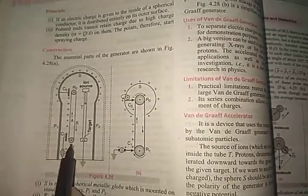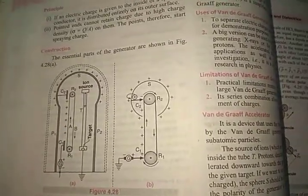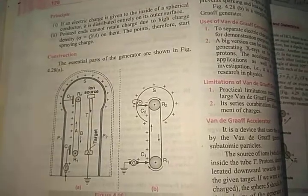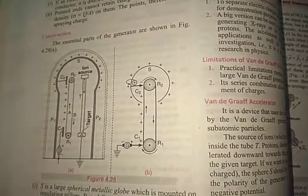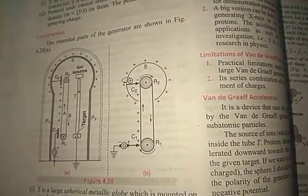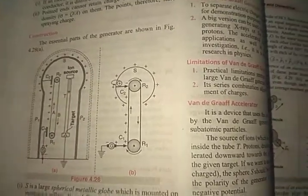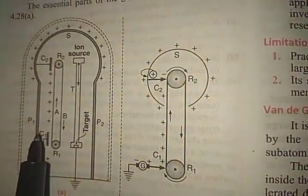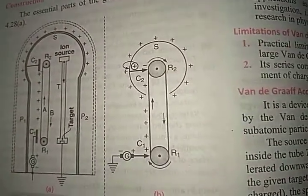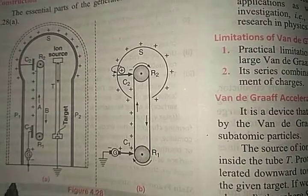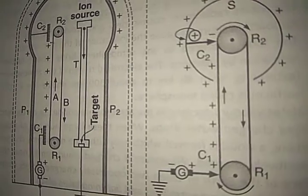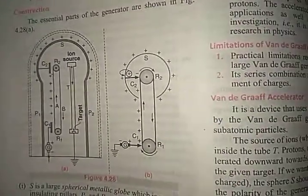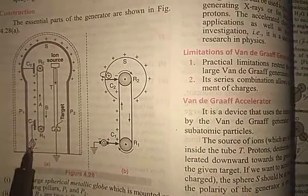R1 and R2 are two rollers, and on these two rollers one belt is placed, driven by an electric motor. This conveyor belt AB is made of insulating material and runs over the rollers at a speed of about 60 miles per hour. C1 and C2 are two metallic combs — you can see C1 and C2 here in the diagram.